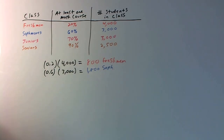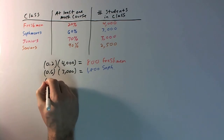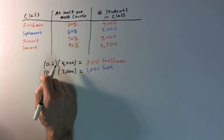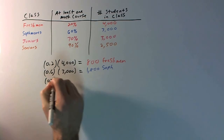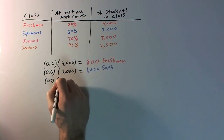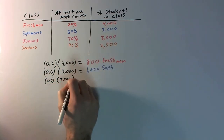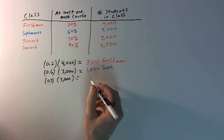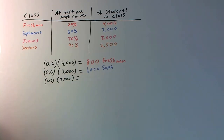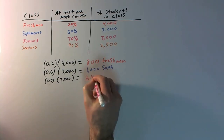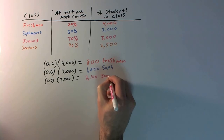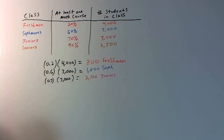And then ultimately the juniors: 0.7 times 3,000 — again, 3,000 students in the junior class — and that is going to be 2,100 juniors.